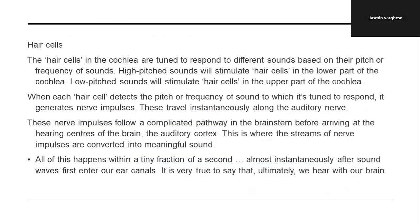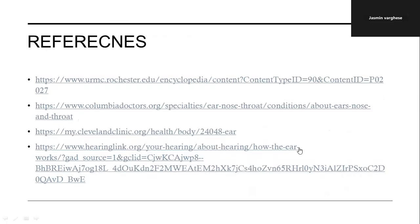All of this happens within a tiny fraction of a second after sound waves first enter the ear canal. We ultimately hear with our brain. To summarize the pathway: sound enters the pinna, travels through the external auditory canal to the tympanic membrane, then through the malleus, incus and stapes to the cochlea, where stereocilia generate electrical impulses that travel to the auditory cortex of the brain. These are all the parts and the physiology of ear, nose and throat. Thank you.